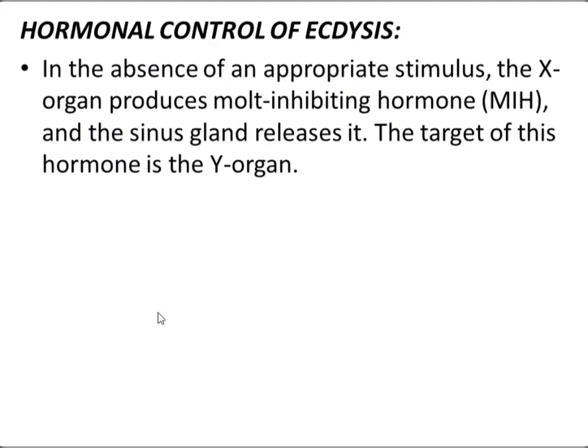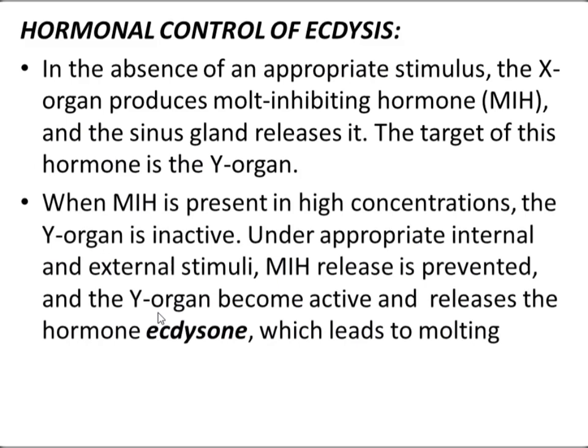In the absence of an appropriate stimulus, the X organ produces MIH — the molt-inhibiting hormone — and the sinus gland releases it. The target of this hormone is the Y organ. When MIH is present in high concentration, the Y organ is inactive and no molting occurs.